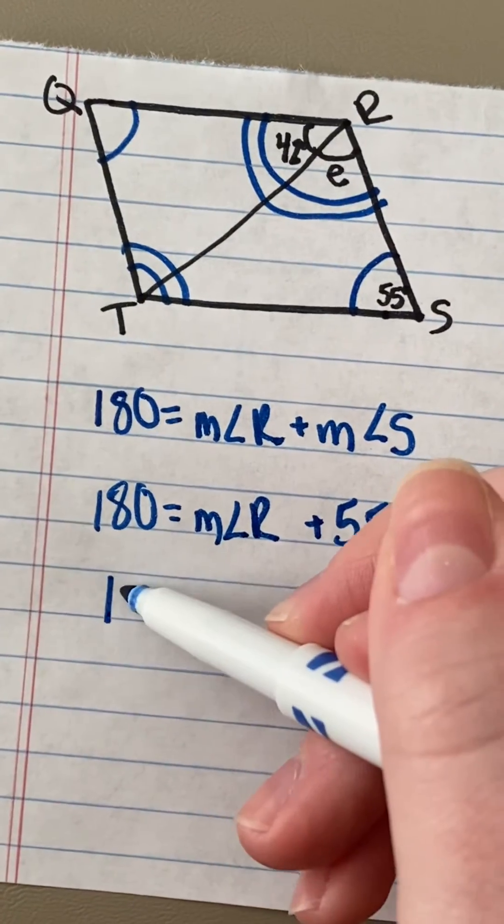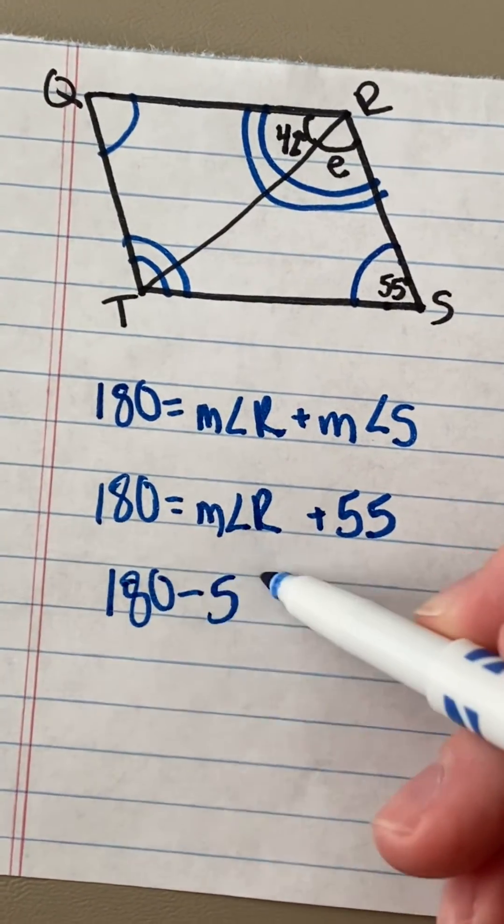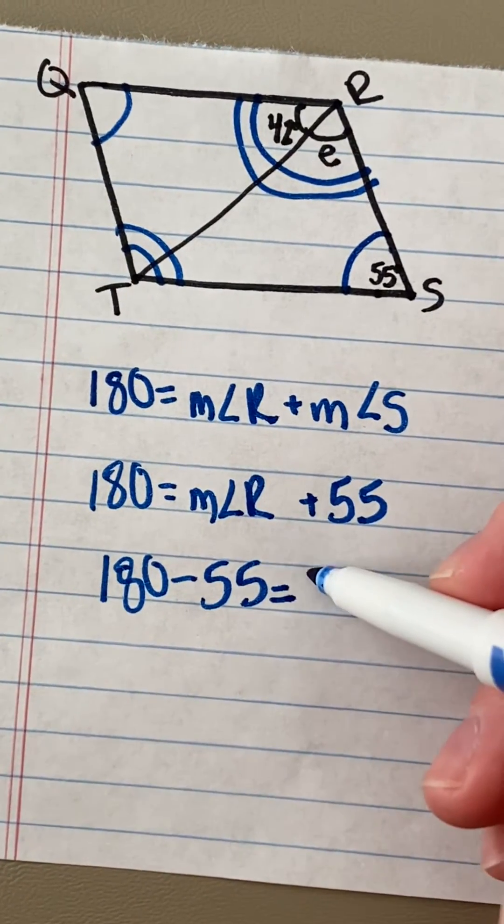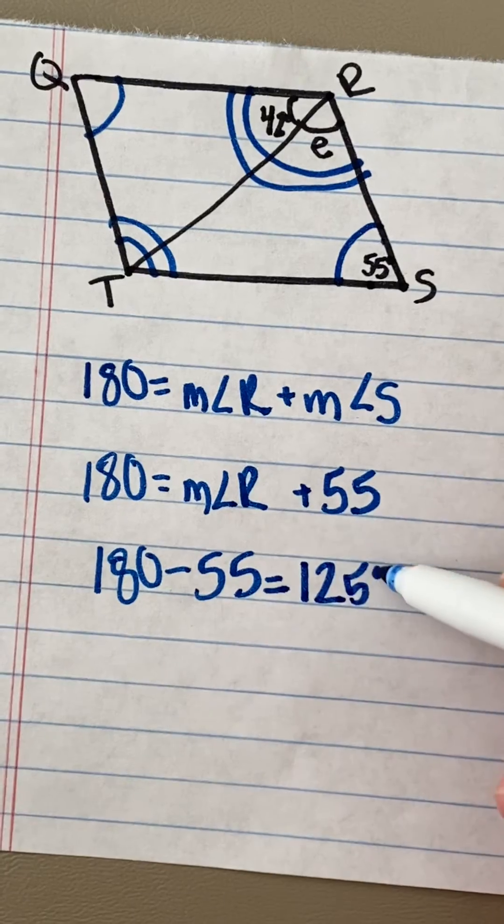But once I do my subtraction, I figure out that angle R equals 125 degrees.